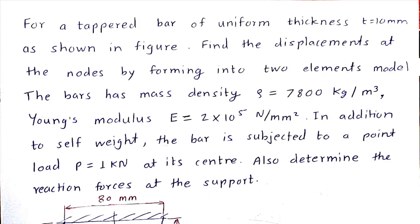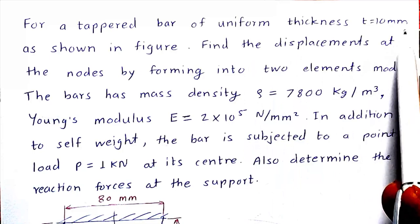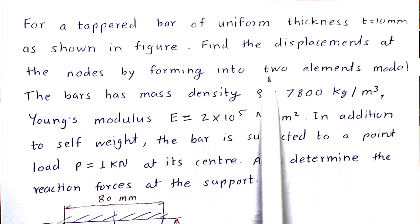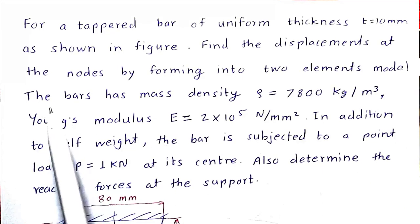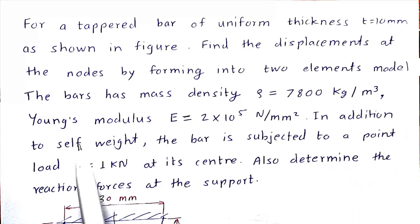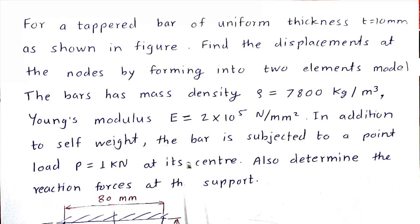Hello everyone. In this video we are going to see a tapered bar with body force or gravitational force. For a tapered bar of uniform thickness 10 mm as shown in figure, find the displacement at the nodes by forming two elements of the model. The bar has mass density rho equal to 7800 kg per meter cube, Young's modulus E equal to 2 into 10 raised to 5 N per mm square. In addition to self weight, the bar is subjected to point load P equal to 1 kN at its center. Also determine the reaction forces at the support.